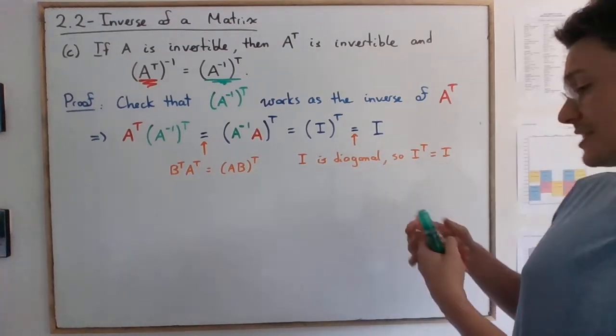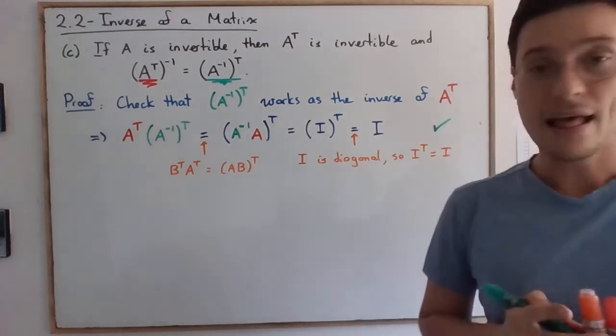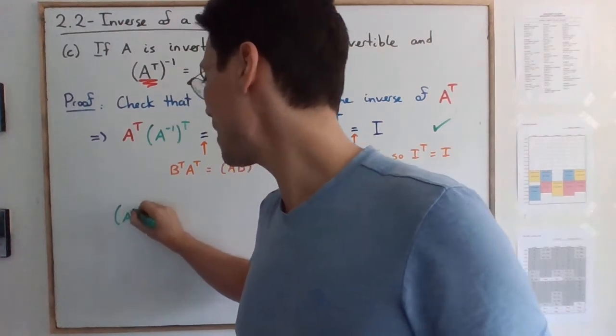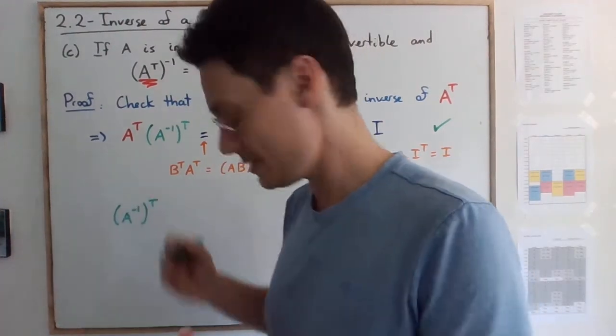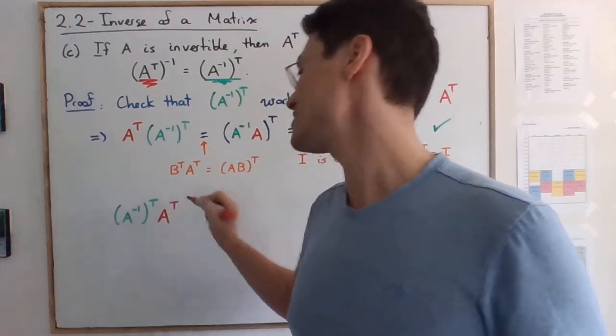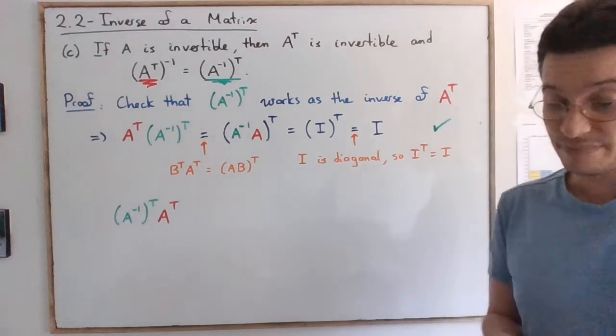Now, so this part is checked. And now we're doing the opposite. We're trying to do (A^-1)^T multiplied by A^T like this. So we want to show that this is also the identity matrix.